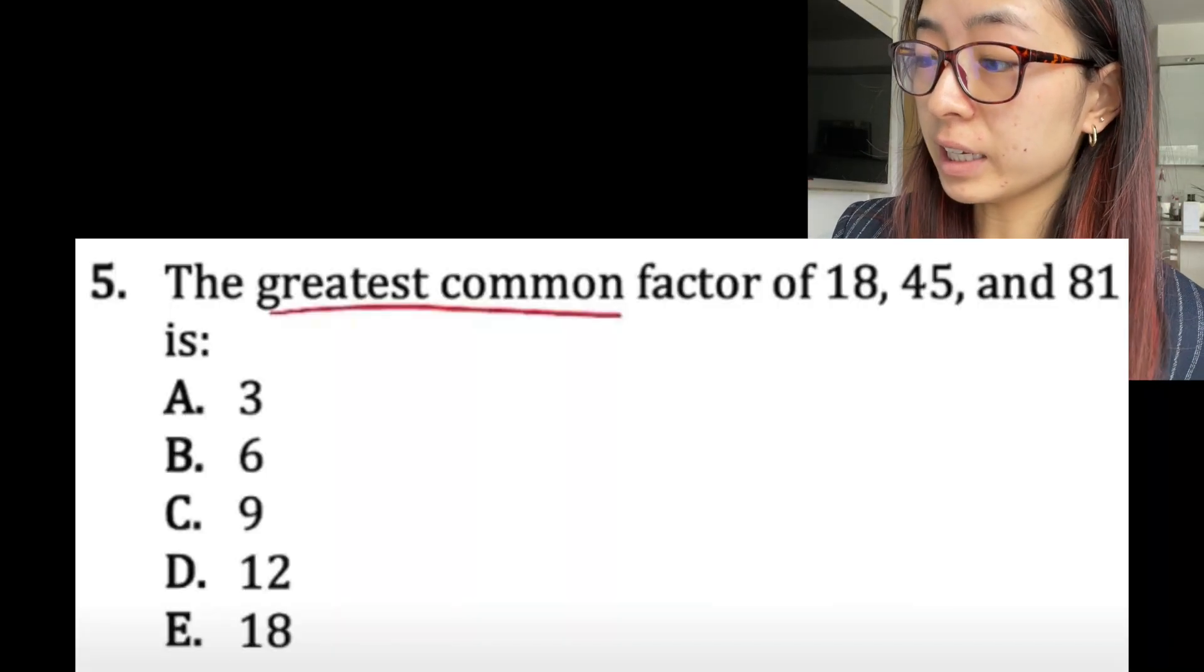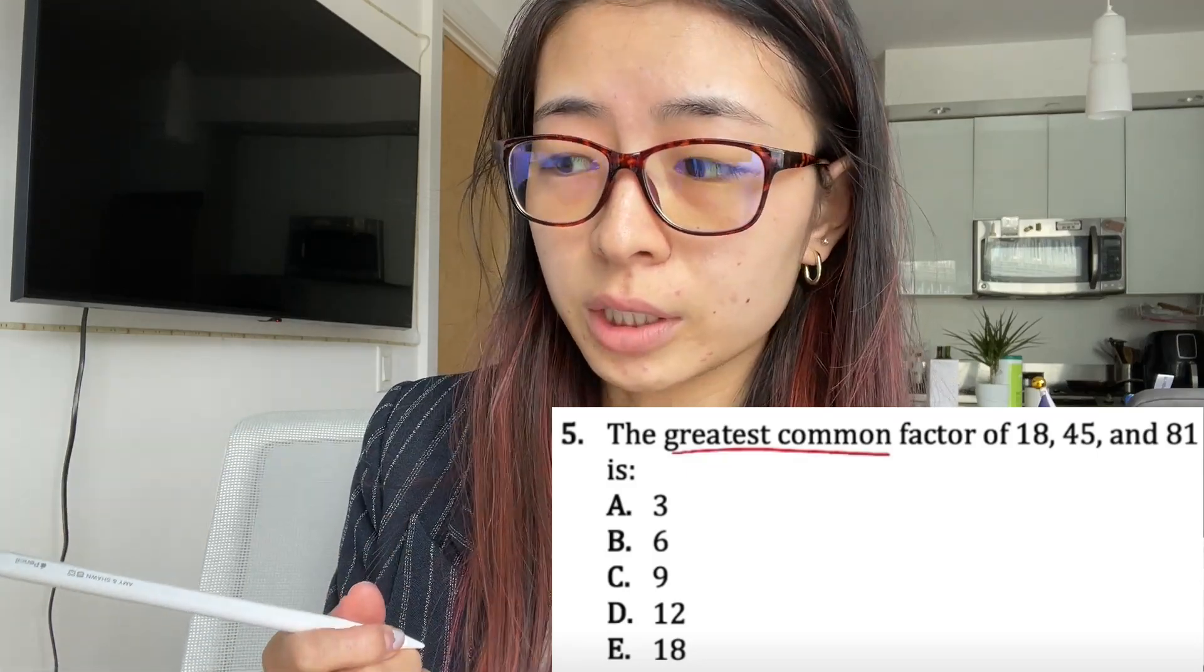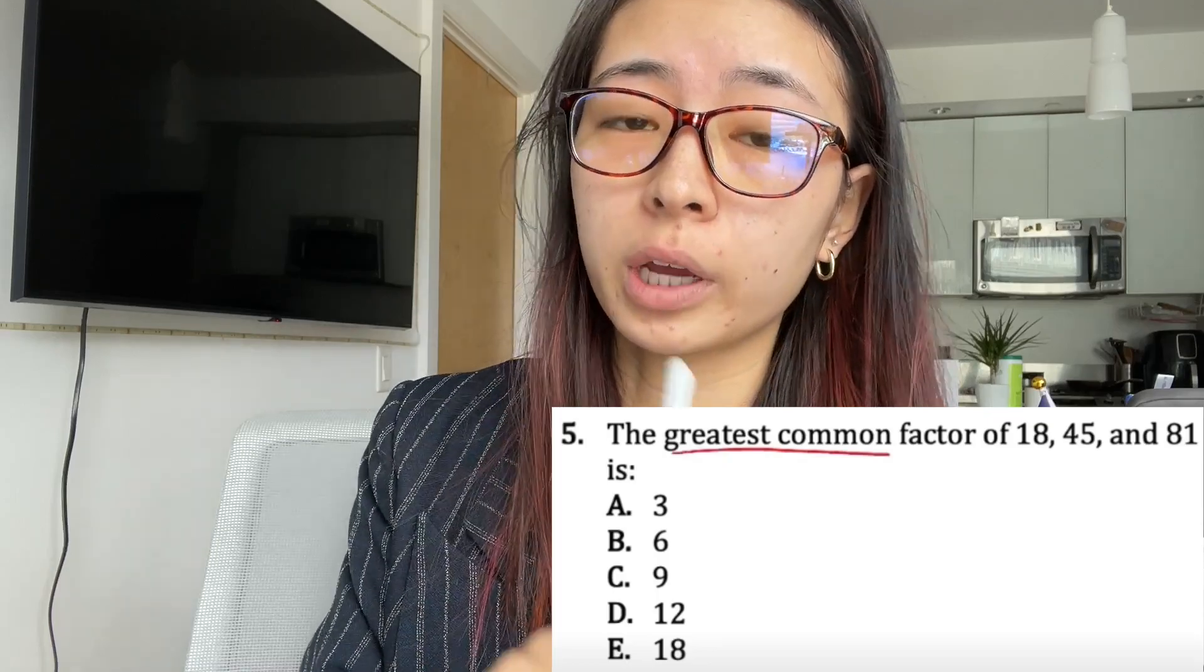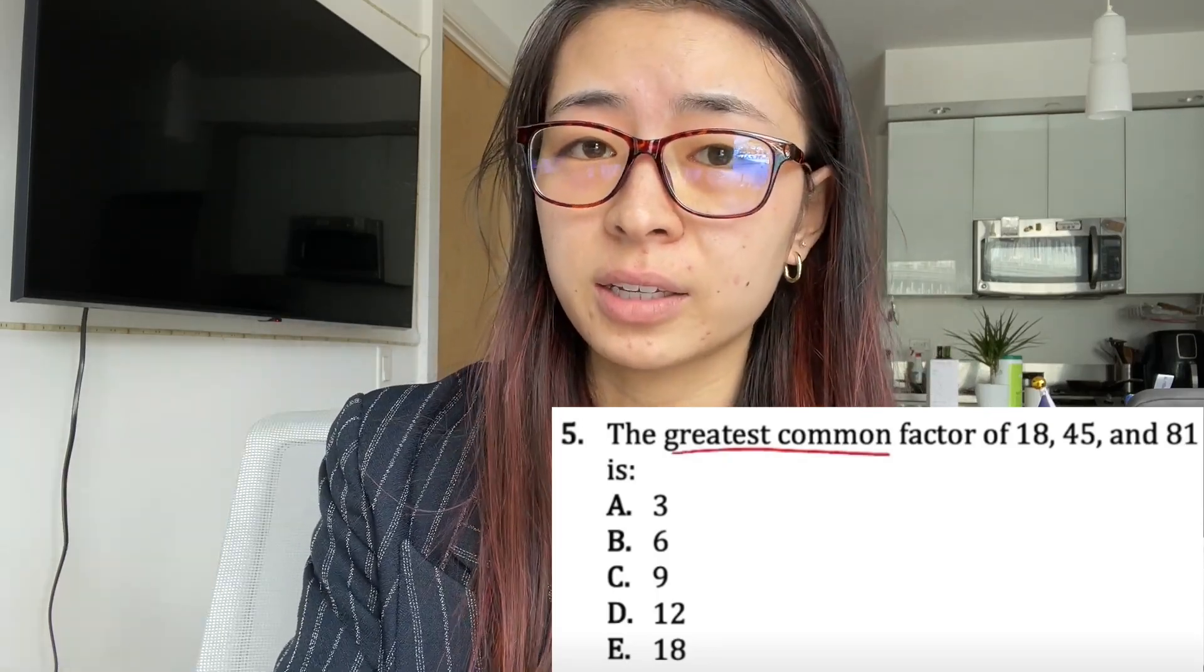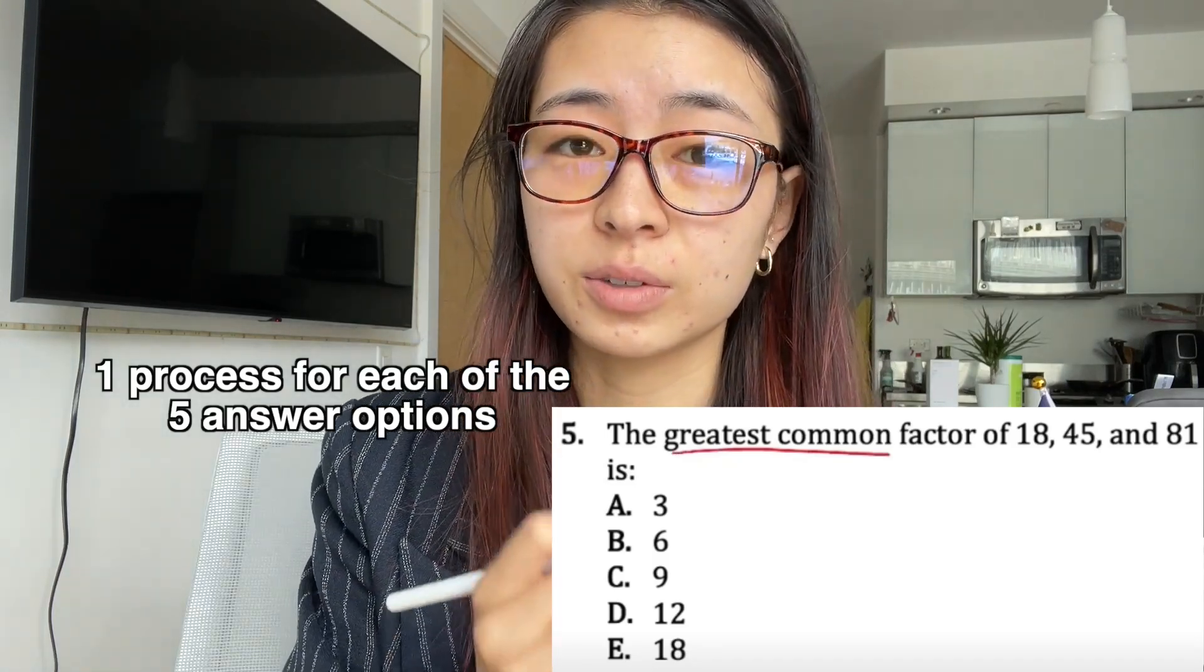The greatest common factor of 18, 45, and 81 is... This YouTube channel's solution is to use guess and check, but you should avoid guess and check whenever possible because it could take more time—you have to go through as many as five processes to see if one works. And two, because you have to do more calculations instead of solving it in a straightforward way, it's easier to make mistakes, and careless mistakes are the worst reasons to miss points.